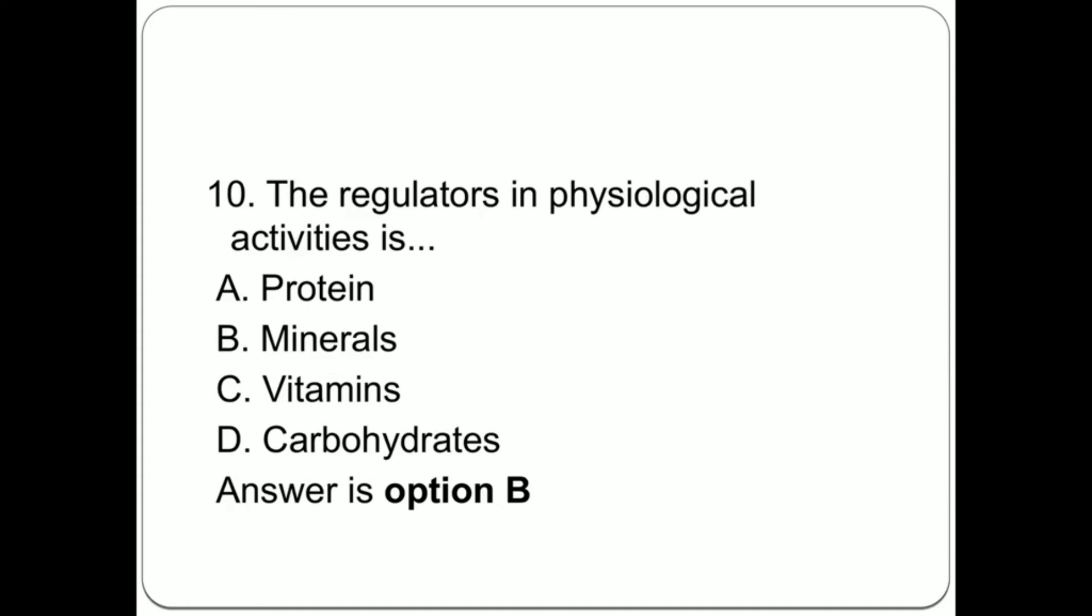Question 10: The regulators in physiological activities is: A. Protein, B. Minerals, C. Vitamins, D. Carbohydrates. Answer is option B, Minerals.